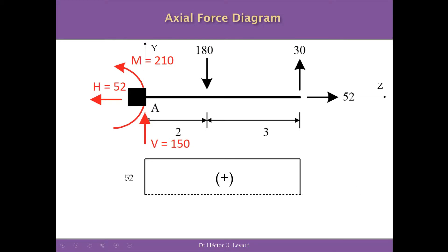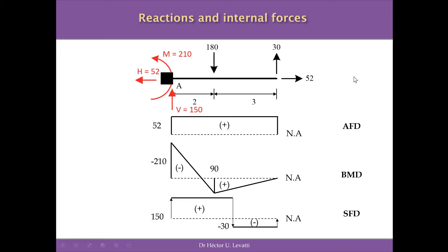This new axial force diagram is added alongside the shear force and bending moment diagrams to give a complete analysis of internal forces. The axial force diagram shows 52 kN of tensile force throughout; the bending moment diagram shows its distribution; and the shear force diagram shows the distribution of shear across the full length of the beam.